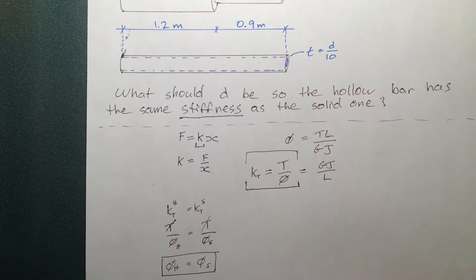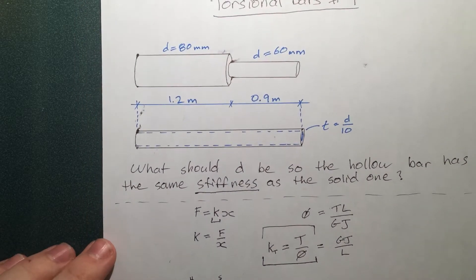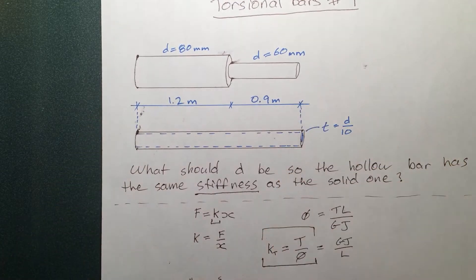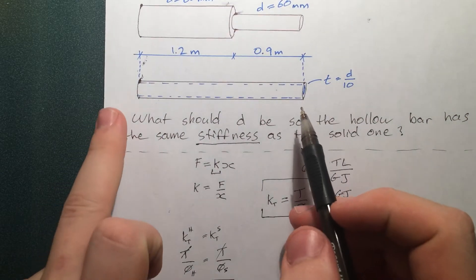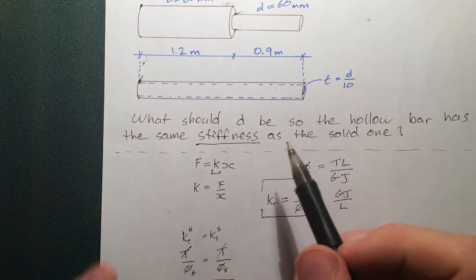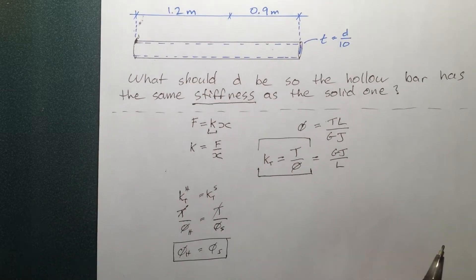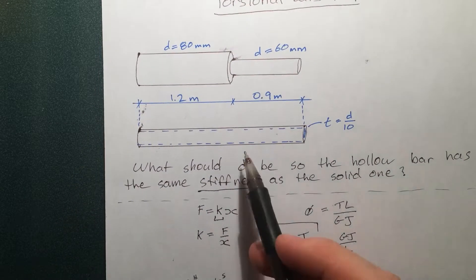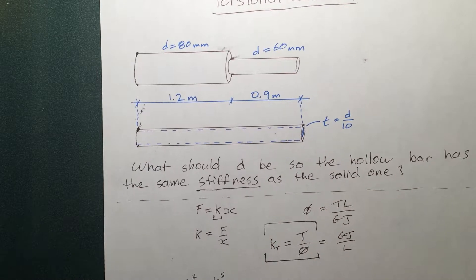So we can find the twist of the solid one. Because we know everything about it. And we can find the twist of this in terms of D. Now, we're going to have some other variables that are common to both situations. But those will cancel out.